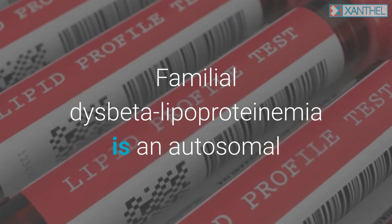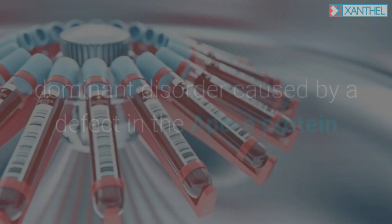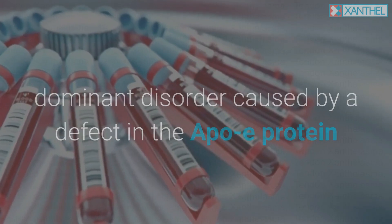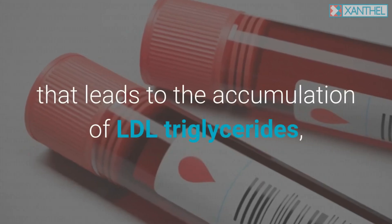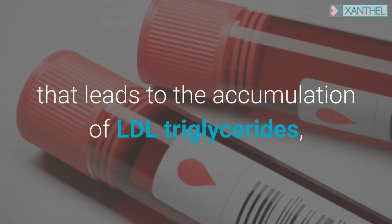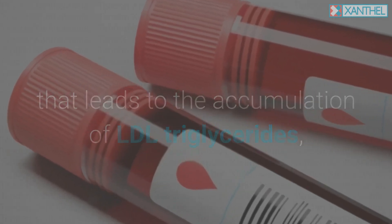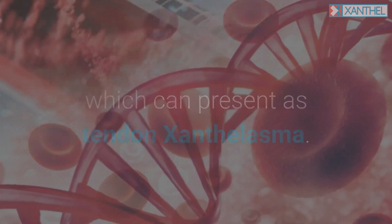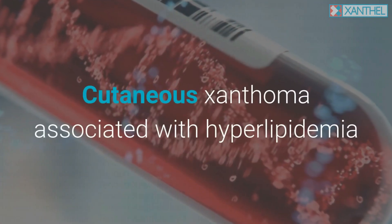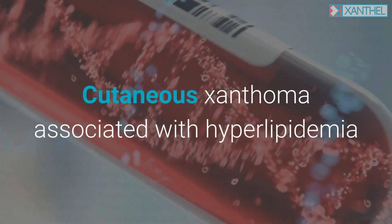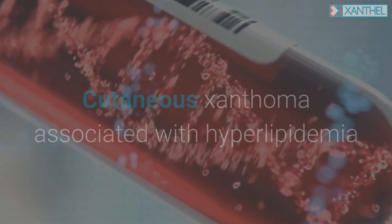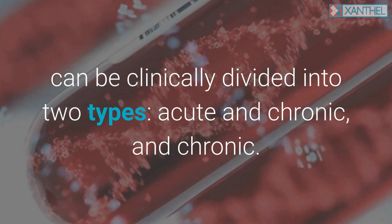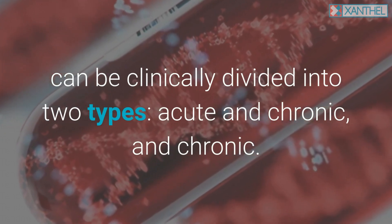Familial dyslipoproteinemia is an autosomal dominant disorder caused by a defect in the ApoE protein that leads to the accumulation of LDL triglycerides, which can present as tendon xanthalasma. Cutaneous xanthoma associated with hyperlipidemia can be clinically divided into two types: acute and chronic.